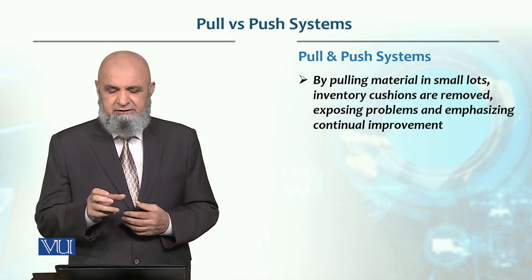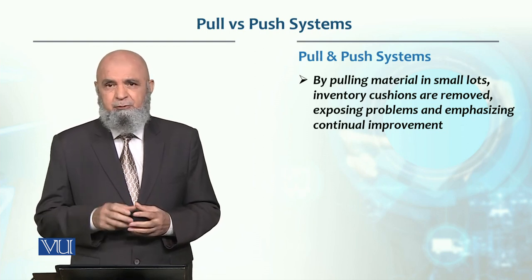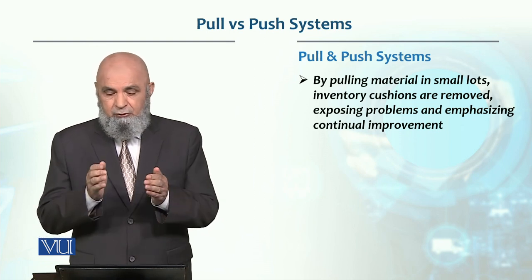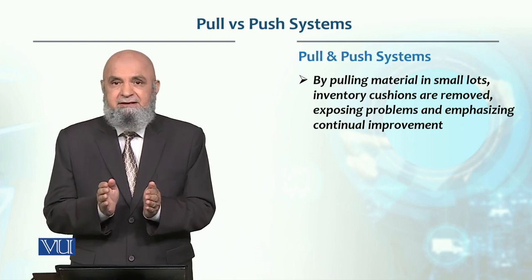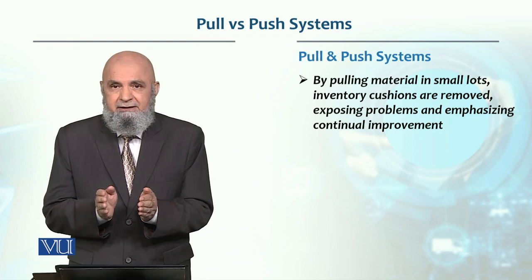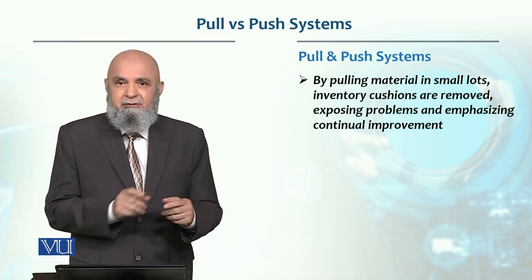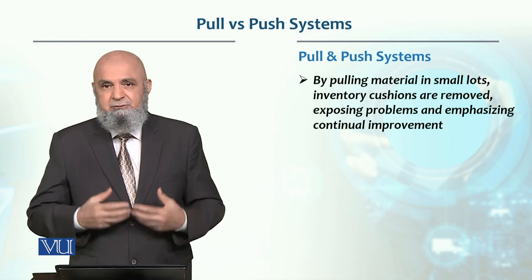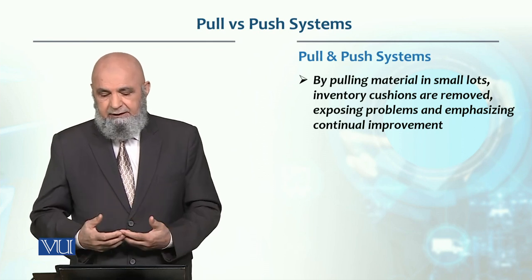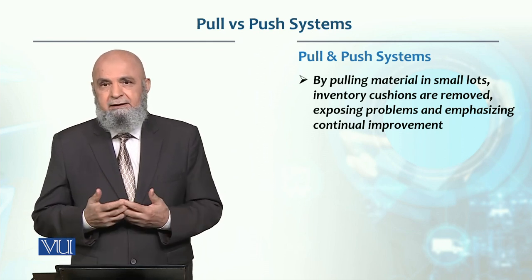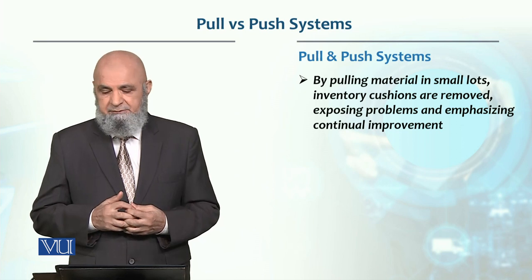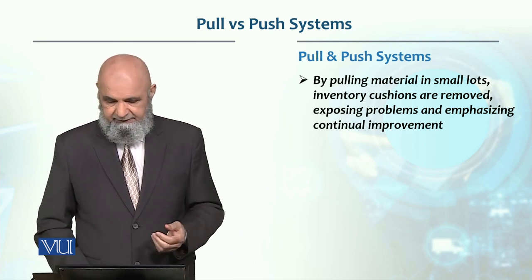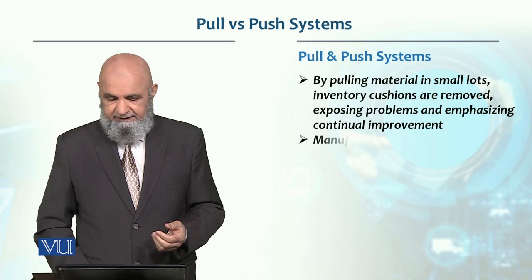So inventory decreases, and secondly, problems are identified much more quickly. For example, if a small lot is being produced and a defective unit comes out, it becomes immediately apparent. If ten units are produced and some are defective, the cause can be traced right away. So it becomes very easy to expose problems in the system and make improvements easily.